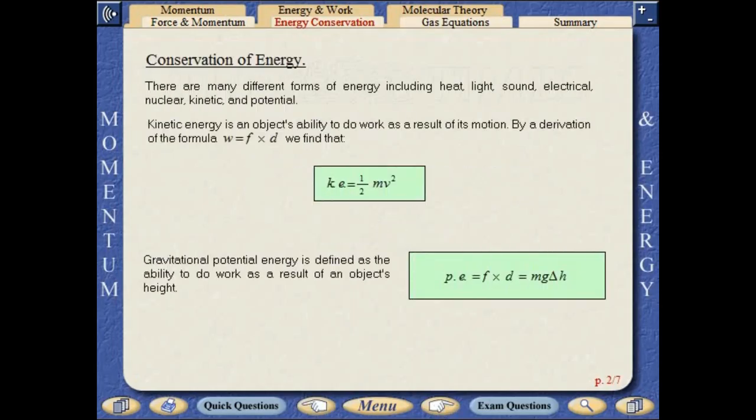There are many different forms of energy, including heat, sound, electrical, kinetic and potential. Kinetic energy is an object's ability to do work as a result of its motion. Gravitational potential energy is defined as the ability to do work as a result of an object's height.